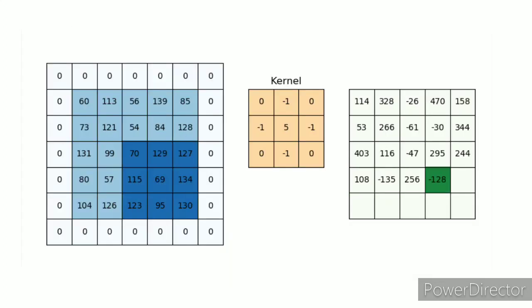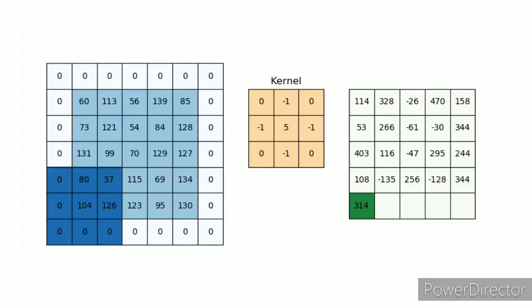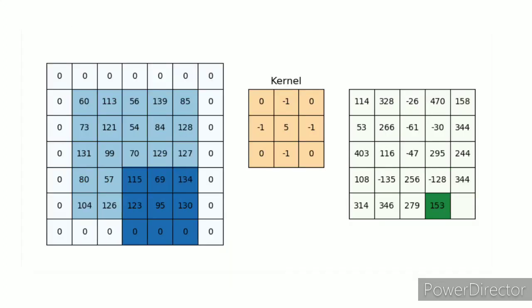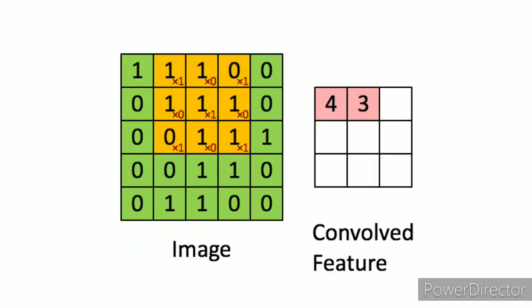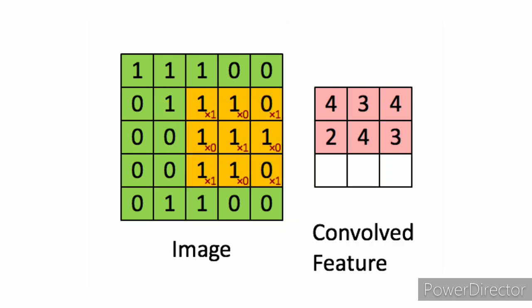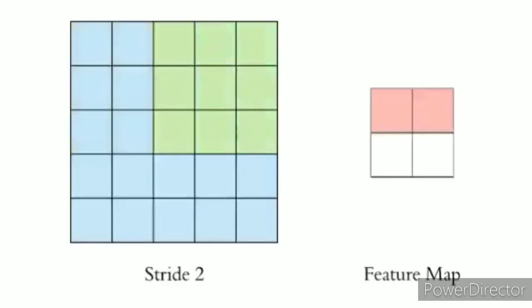What is stride? In this image the filter is taking one step equivalent to one pixel, so it is stride-1 movement. Stride-2 will be something where at each step there is a two-pixel shifting.